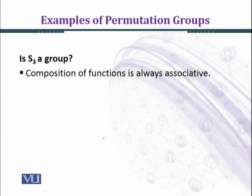This idea can be extended to Sn. Epsilon is the identity permutation. For S3, the identity maps 1→1, 2→2, 3→3.